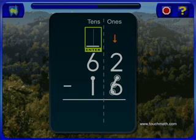Touch the top number, say its name, and count backward on the touch points of the bottom number. If you cannot count all of the touch points, you must regroup.